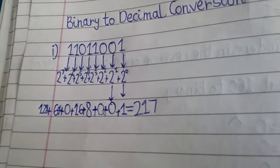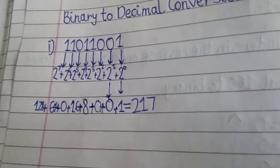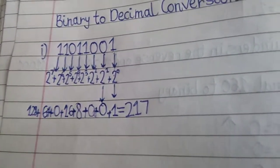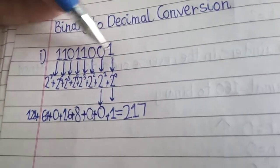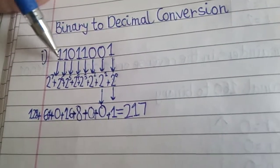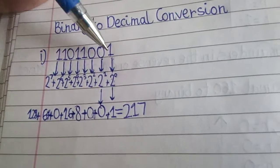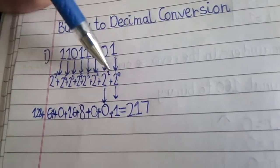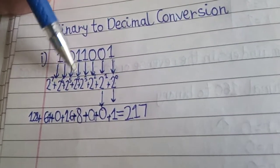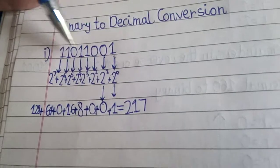So, always remember, while calculating the decimal number, a binary number will be given. And in order to find the sum, we have to start from the right. Then, we have to start from 2 raise to 0. It depends on how many bits there are. There are 8 bits, so therefore 2 raise to 0 till 2 raise to 7. It depends on the number of bits that binary number has.